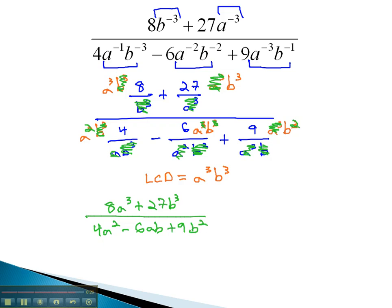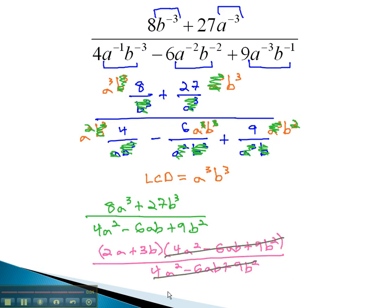You may recognize that numerator factors as a sum of cubes. 2a, plus 3b, times 4a squared, minus 6ab, plus 9b squared, over the denominator 4a squared, minus 6ab, plus 9b squared. Sure enough, that trinomial divides out, and our final answer is 2a, plus 3b.